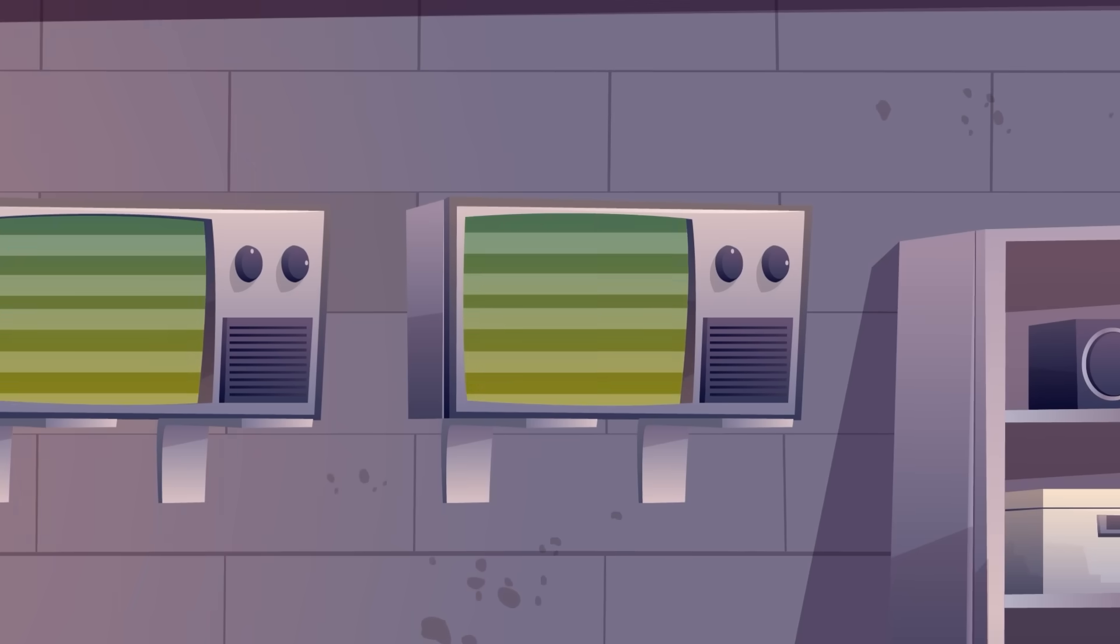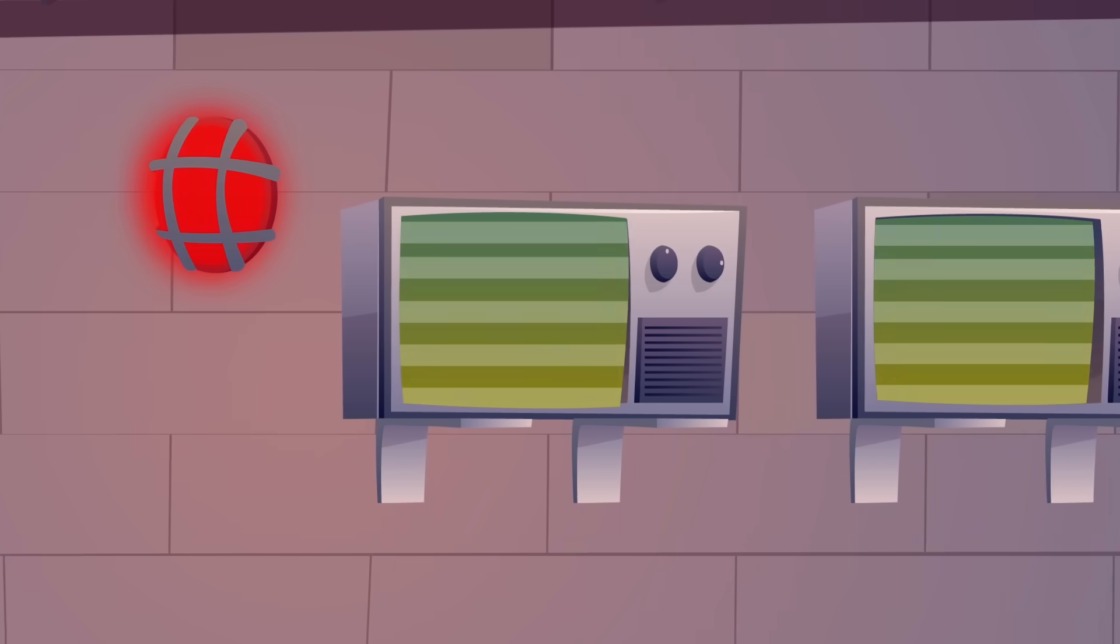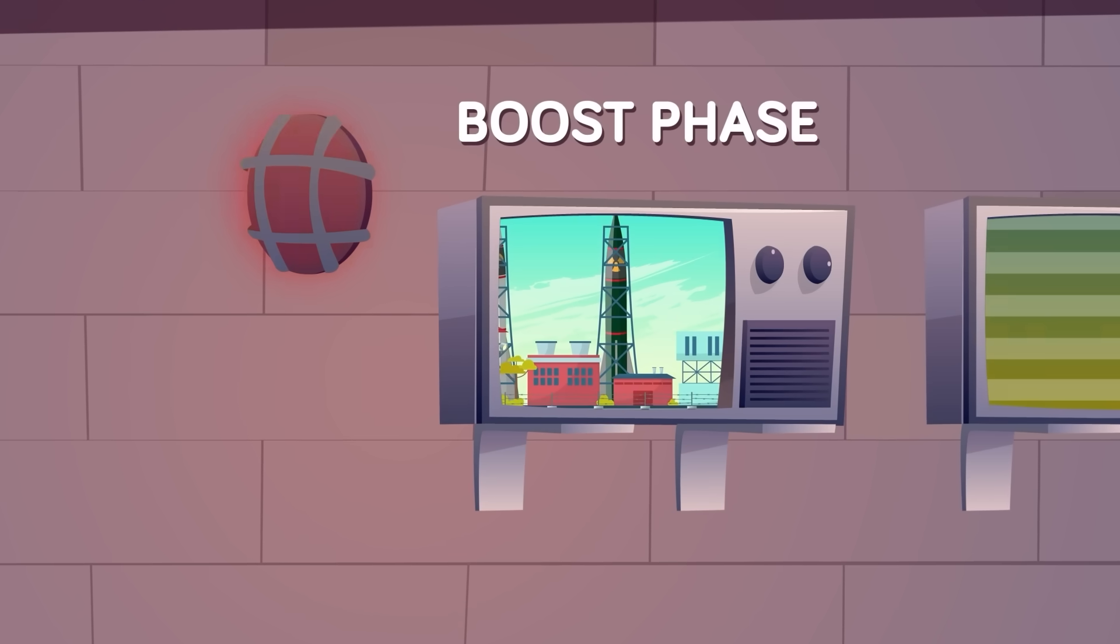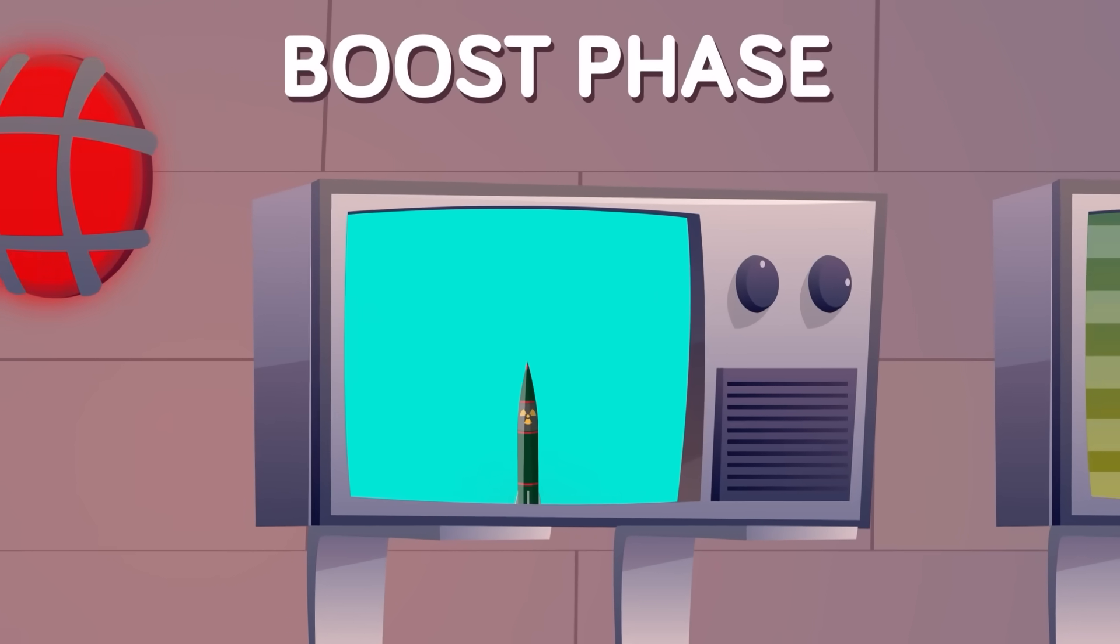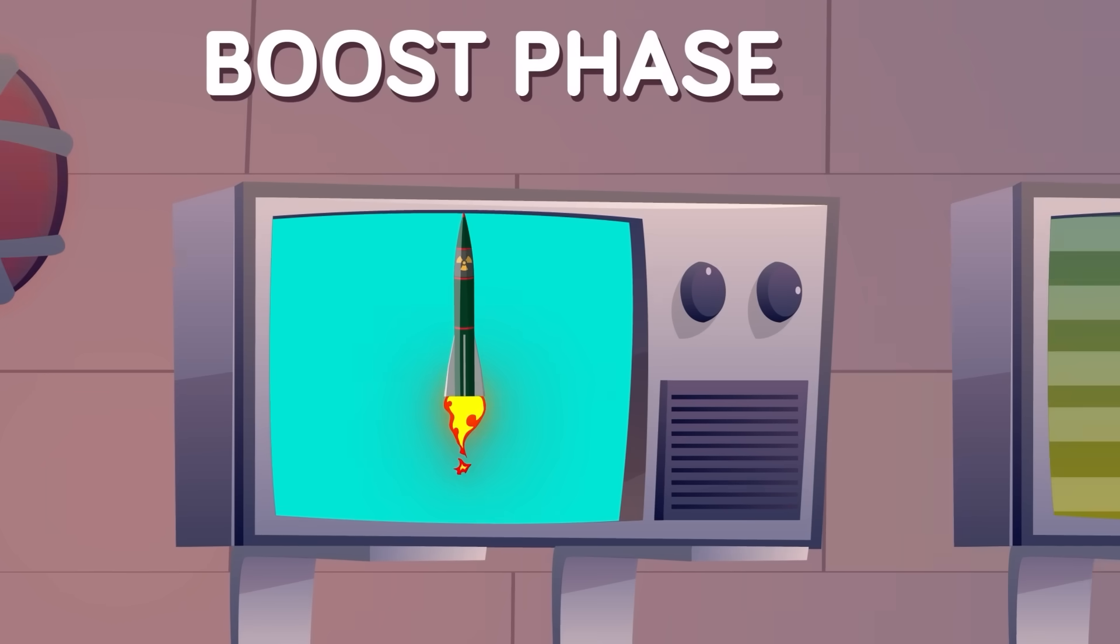Whenever a ballistic missile launches, its flight path is broken down into three phases. The first phase is known as the boost phase. This phase consists of when the rocket is fired and as it begins gathering enough speed before transitioning to the next phase of flight.